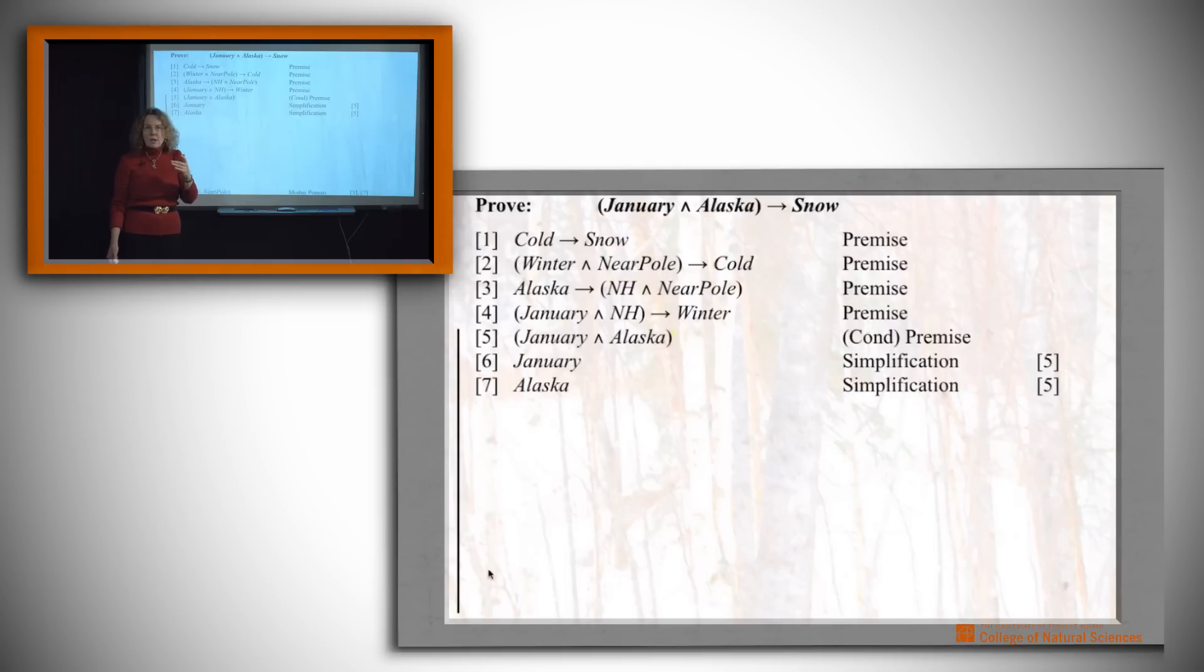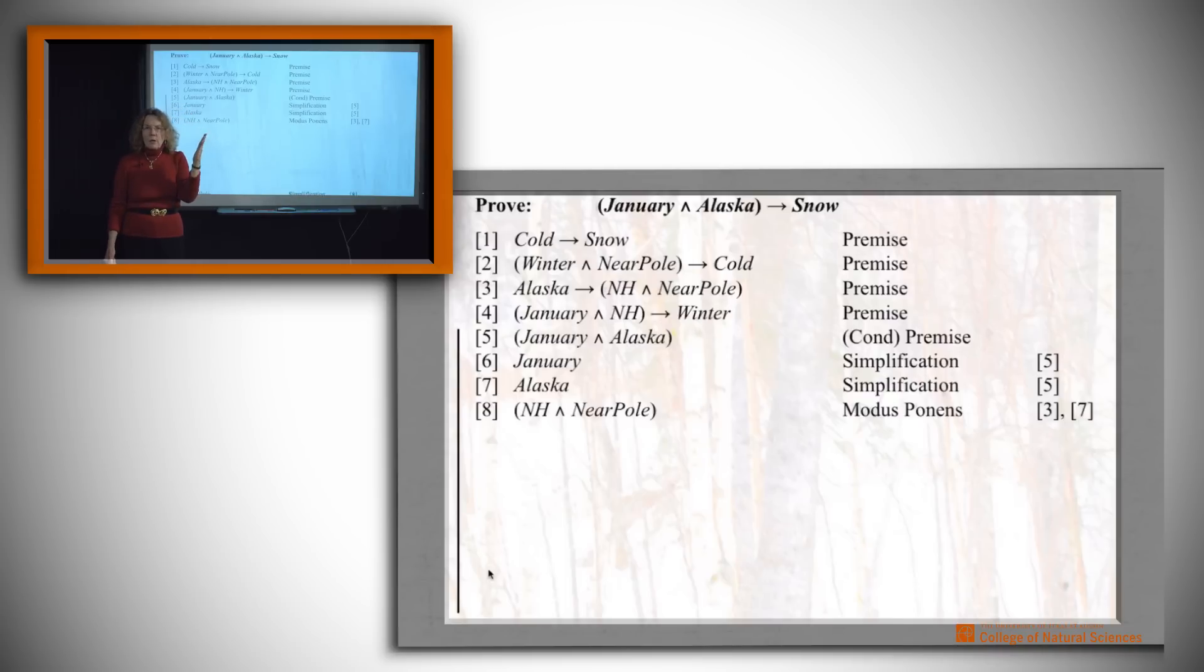All right, what can we do next? Well, if it's Alaska, then we're in the northern hemisphere and we're near the pole using modus ponens. So let's go ahead and assert that. And then we can pull those two apart again using simplification. We know that you're in the northern hemisphere. We know that you're near the pole. So we've got those two facts that we can now use however we like.